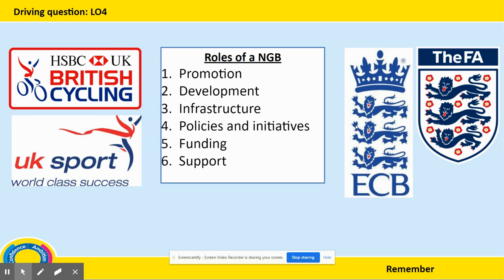The final LO is all about national governing bodies. If you haven't heard of this before, these are essentially put in place to help sport happen at both elite level and amateur level. In order to help sport happen, there are several roles put in place — and these are relevant not only to bodies such as the FA (the Football Association), but also to all national governing bodies such as the ECB (England Cricket Board), British Cycling, and UK Sport. The roles are promotion, development, infrastructure, policies and initiatives, and funding and support. We are going to look at how each of these roles are achieved and how that helps sport happen at elite and amateur level.